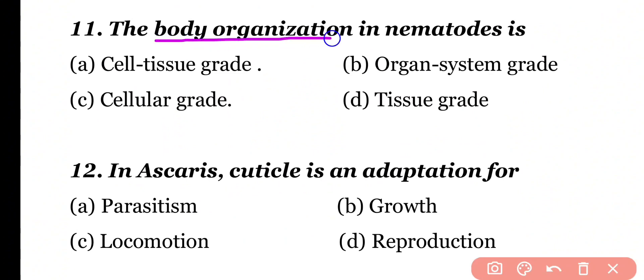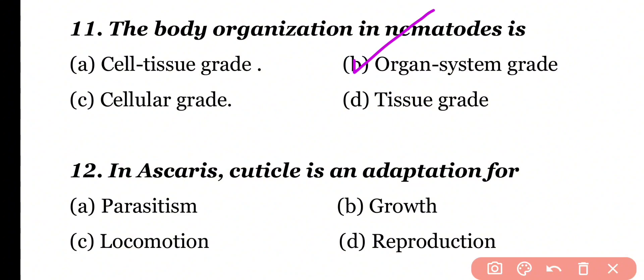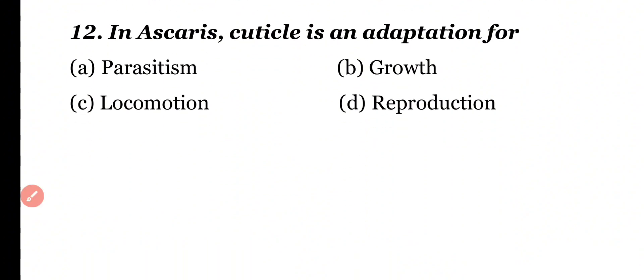Question 11: The body organization in nematodes is cell-tissue grade, organ-system grade, cellular grade, or tissue grade. Correct answer is option B. Organ-system level of organization is present in nematodes.